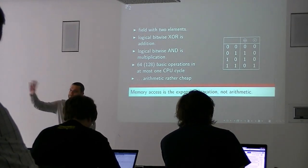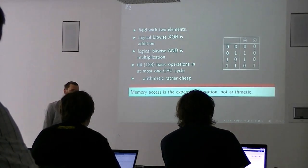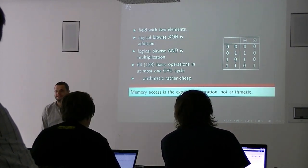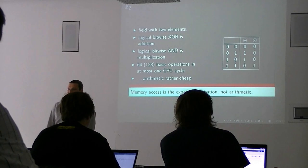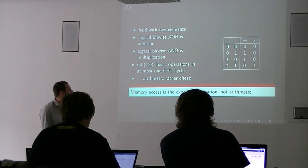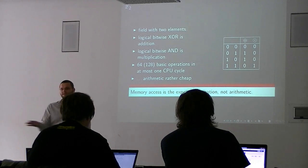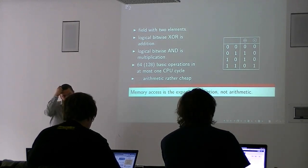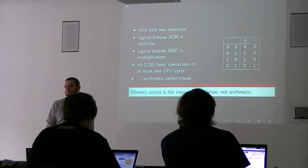As you all know, GF2 is quite easy - addition is an XOR, multiplication is an AND, so it's trivial to do 64 or 128 of those things in at most one CPU cycle. Lesson to take away is arithmetic you don't care about. You don't count field operations like we normally do. That's not really what matters. It's really about memory access. That's what's expensive, that's what you want to minimize.